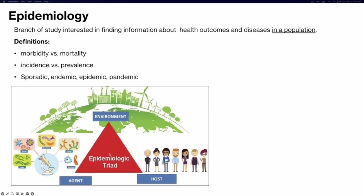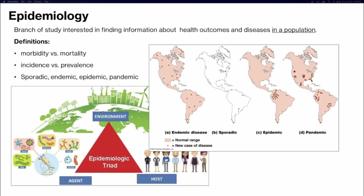Know the epidemiological triad: in order for disease to occur, the environment, the agent, and the host must all be present. We have to be in an environment where that pathogen is present, and a host has to make contact with that pathogen to become infected. Also know that epidemiology is about defined populations — not just one individual — which could be global, a small city, or a population within one hospital.